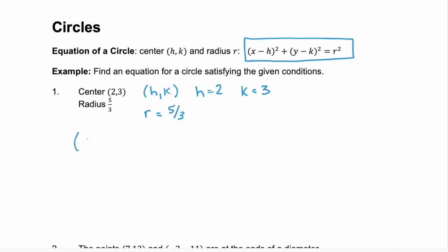So we take that given format x minus h squared plus y minus k squared equals r squared and we're going to substitute in what we know. So the x and the y will stay. First we have x minus h or x minus 2 squared plus y minus k which is 3 squared equals our r 5/3 squared.